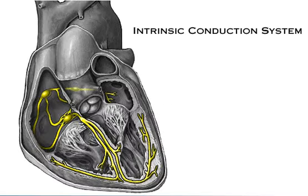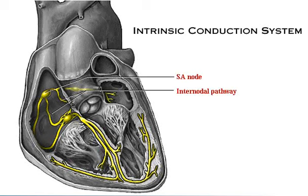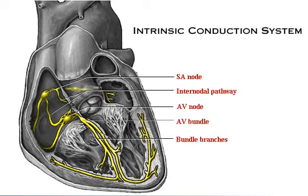This diagram shows the location of the autorhythmic or nodal cells of the Intrinsic Conduction System. Here we see the SA node, internodal pathway, AV node, AV bundle, bundle branches, and Purkinje fibers.